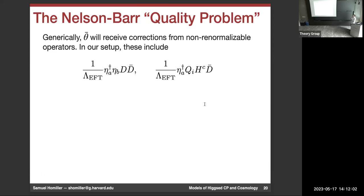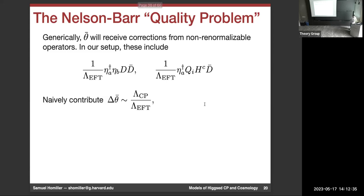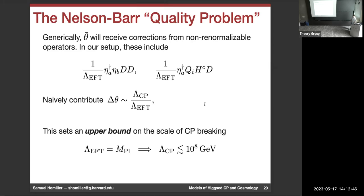The thing I want to focus on is what we call the Nelson-Barr quality problem. Generically, theta-bar also receives corrections from non-renormalizable operators — analogous to the axion quality problem, where higher-dimension operators shift the axion minimum. Here, higher-dimension operators just contribute directly to theta-bar. Doing naive dimensional analysis, these contribute to theta-bar by roughly (λ_CP / Λ_EFT)^n, where Λ_EFT is the cutoff. Requiring these contributions to be less than 10^{-10} and taking the cutoff as high as the Planck scale, tells you that λ_CP must be below about 10^8 GeV.